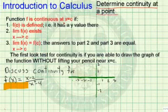For a function f to be continuous at the point x equals c, f of c must be defined. We must have a y value there. The limit of f of x must exist as x gets closer to c, and finally, these two answers have to be equal to each other.